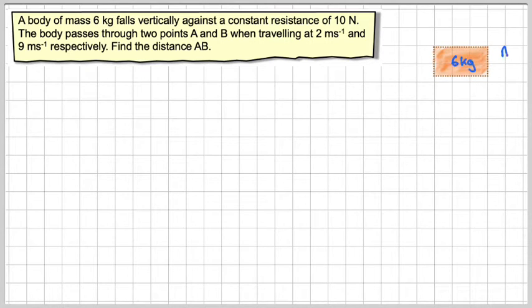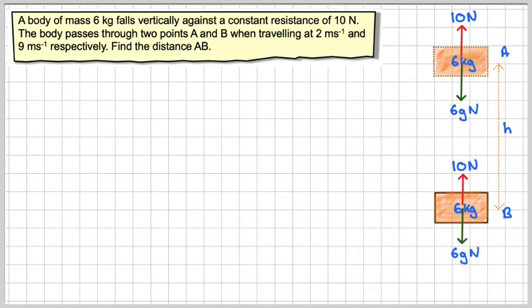So here is my particle or body at A. It's moving against a force of 10 newtons, so it's moving downwards at 6g newtons. It's going to go down h metres, where this is 6 kilograms, and again the resistance force of 10 newtons.